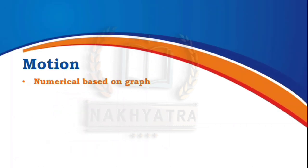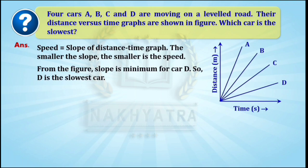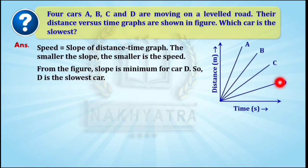Now we will see numericals based on graphs. Four cars A, B, C and D are moving on a level road; their distance versus time graphs are shown. We have to find which car is the slowest. Speed equals the slope of the distance-time graph, and the smaller the slope, the smaller the speed. From the figure, the slope is minimum for car D, so D is the slowest car.